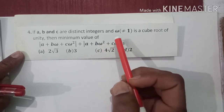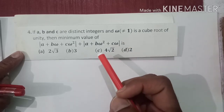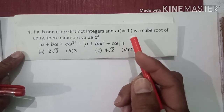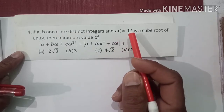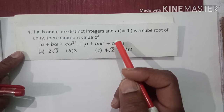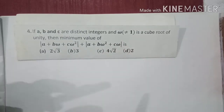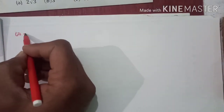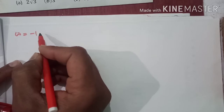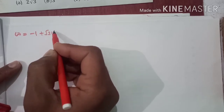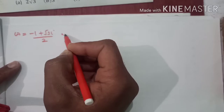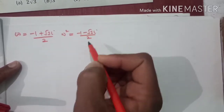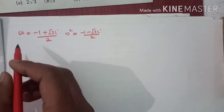آپ کو پتہ ہے cube root of unity کے تین roots ہوتے ہیں: ایک ہوتا ہے 1، ایک کو ہم کہتے ہیں omega اور ایک کو کہتے ہیں omega square۔ یہاں کہا ہے کہ omega کو 1 مت مانو۔ باقی دو values ہیں: omega = (−1 + √3 i)/2 اور omega² = (−1 − √3 i)/2۔